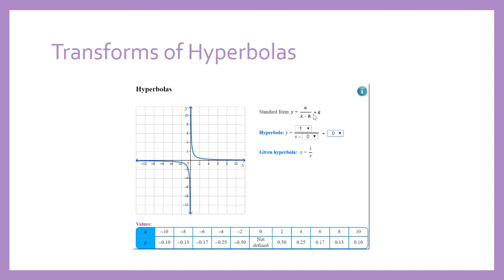So when we change our h value, that's our horizontal translation. If it changes to a one, it moves it to the right. You can see our asymptote has actually moved. It's no longer at zero. On this table of values, there is no one column because the asymptote is now at one. Because if x is one here, one subtract one is zero. And that doesn't work.